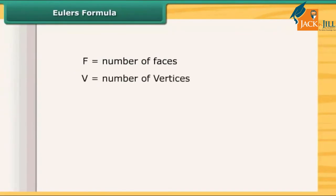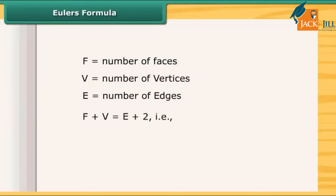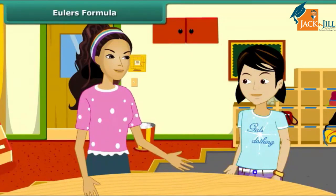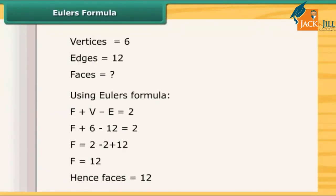If F stands for number of faces, V stands for number of vertices, and E stands for number of edges, then Euler's formula is: F + V = E + 2, that is, F + V − E = 2. This formula is true for any polyhedron. If the number of vertices and number of edges of a polyhedron is given, we can find the number of faces using Euler's formula. Similarly, any two values can be used to find the third.